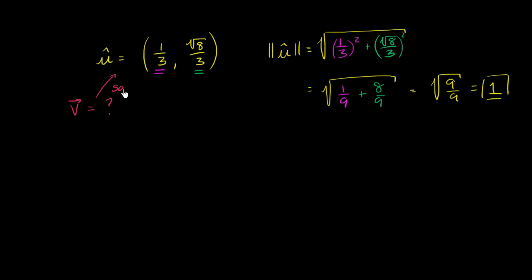So it has same direction as u, but has a magnitude of 11. So we want the vector v to have a magnitude of 11. So how could I define vector v?